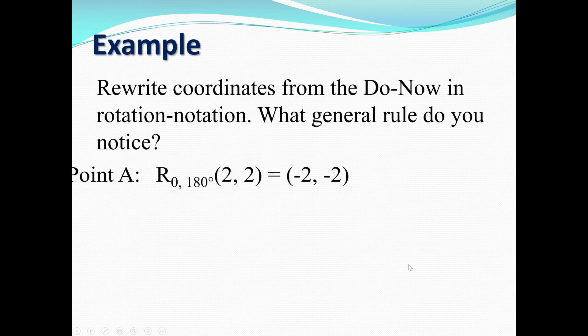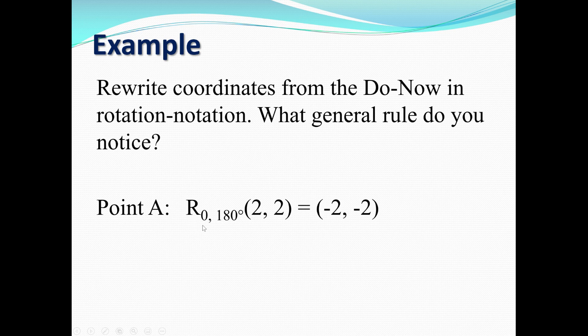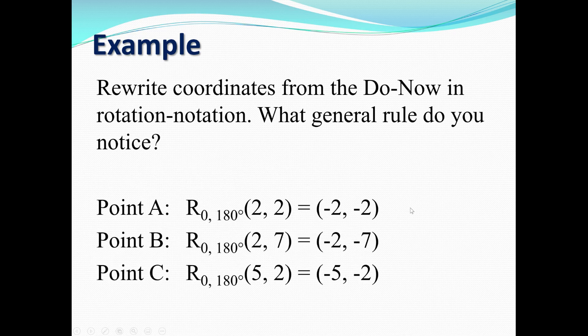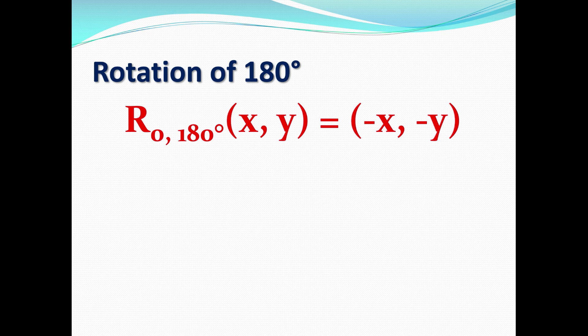For point A, we're rotating over the origin by 180 degrees — positive because we're rotating counterclockwise — taking point (2,2) to obtain (-2,-2). For point B, we did the same thing: rotating (2,7) by 180 degrees over the origin to obtain (-2,-7). For point C, rotating (5,2) by 180 degrees over the origin to obtain (-5,-2). Do you notice a general rule? If you rotate (x,y) over the origin by 180 degrees, the result will always be (-x,-y). That's the general rule.